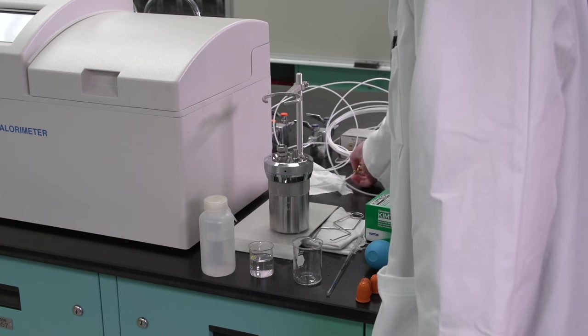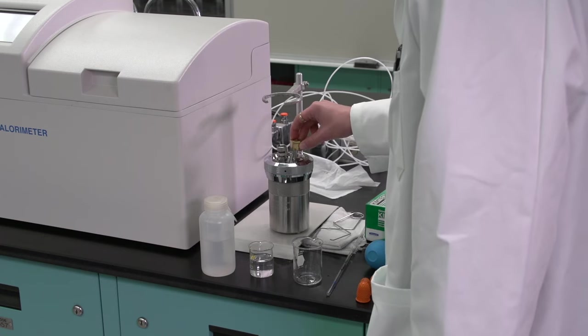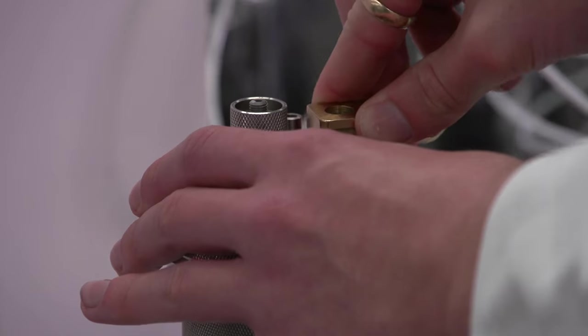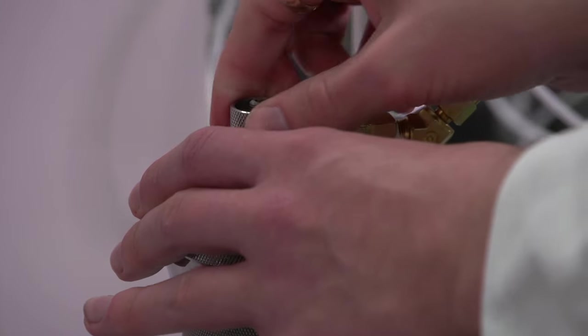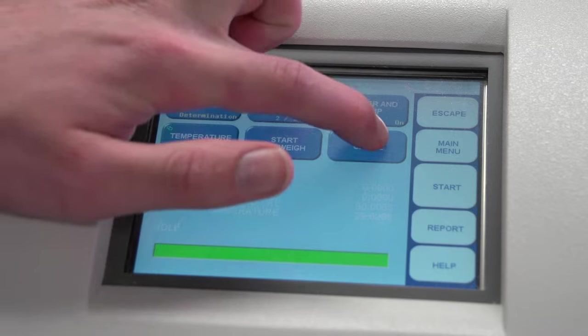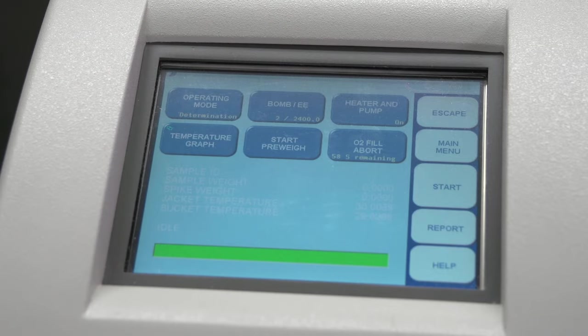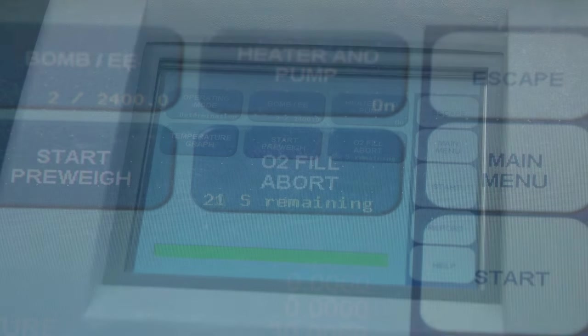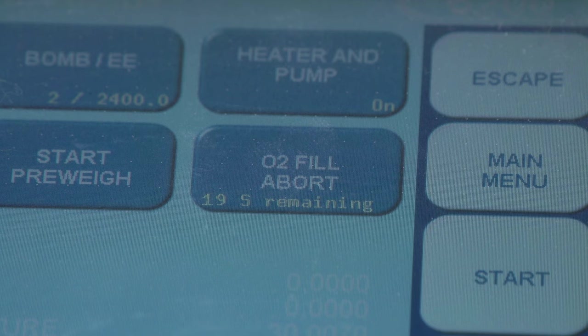Connect the oxygen filling line to the assembled bomb. Slide the connector over the gas inlet fitting and push it down as far as it will go. Press the O2 fill button on the calorimeter control panel to start the oxygen filling procedure. Oxygen filling will take approximately 60 seconds.